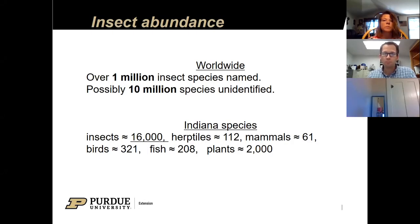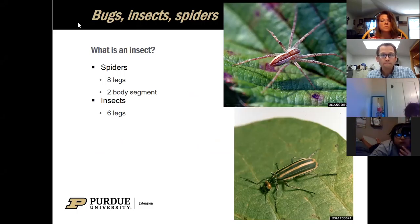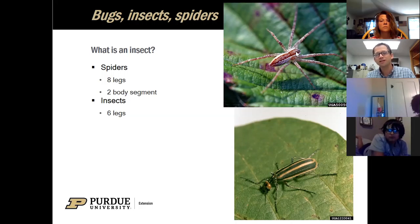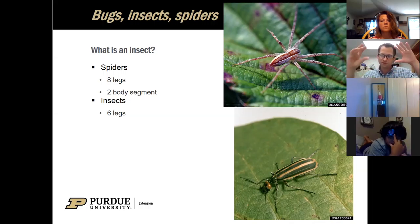What is an insect? A lot of times people just say 'bugs' and throw spiders in there. If we look at a spider, spiders are going to have eight legs and two body segments - one in the back and one in the front where the head is. Most spiders actually have eight eyes. Part of my job is identifying different things people bring me. If you look closely at their eye arrangements, the different sizes and positions, you can tell what kind of spider it is.